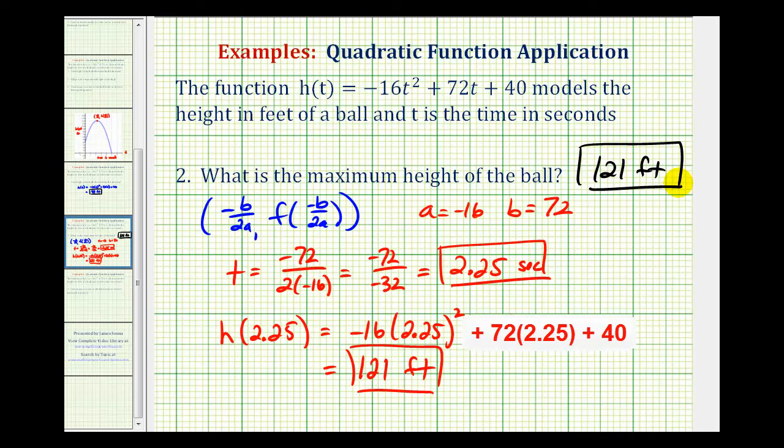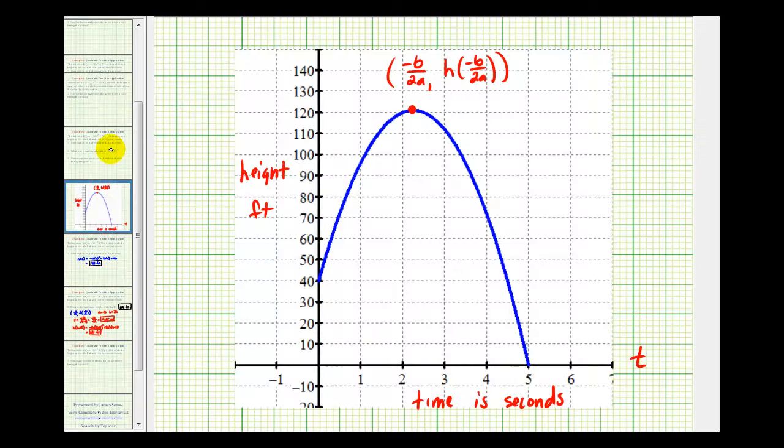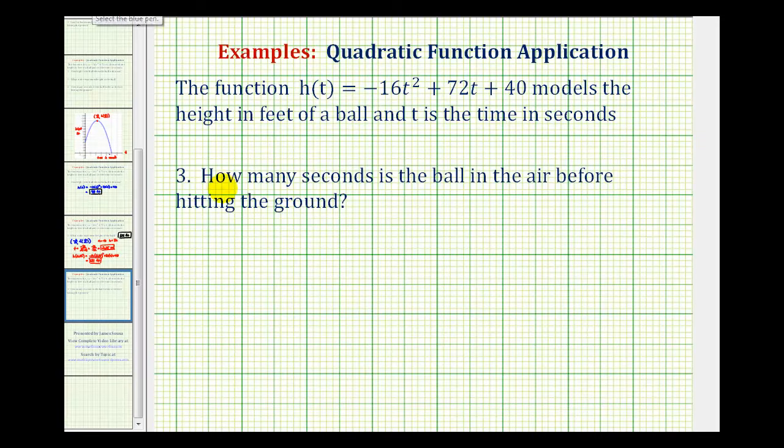And then for the third question, we want to know how many seconds the ball is in the air before hitting the ground. Again, going back to the graph, we can see it's equal to 5, but let's take a look at the algebra behind this. When the ball hits the ground, the height would be 0, or h(t) would be equal to 0.